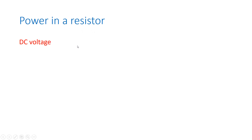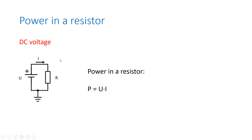We start off with the DC situation. In this situation we have a DC voltage, and to that voltage source we connect a resistor R. We are going to calculate the power in this DC situation, which is equal to P equals the voltage U times the current I. The unit of power is, of course, watt. We can also replace U by I times R, and then we get P equals I squared times R. Or we can replace the current I by the voltage U over R using Ohm's law, so then we get P equals U squared over R.